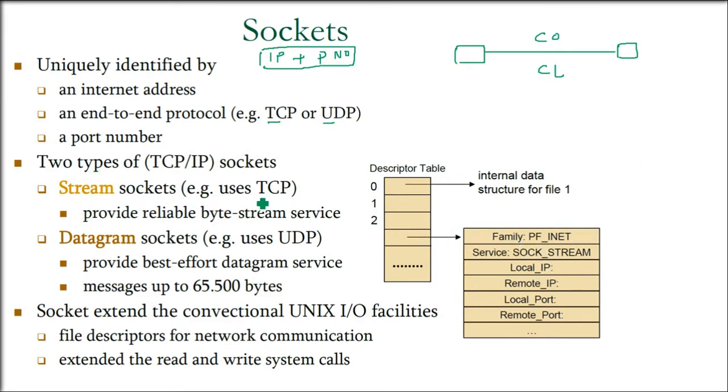They have different stream and datagram. So we have two types of TCP/IP sockets. The first is stream sockets. It's like a river stream, so it has to have some path. So it uses TCP. It provides reliable byte-stream service. That means the data of the packet is being sent. If it is missing, then the acknowledgement will come, you can send it again. So reliable byte-stream service.